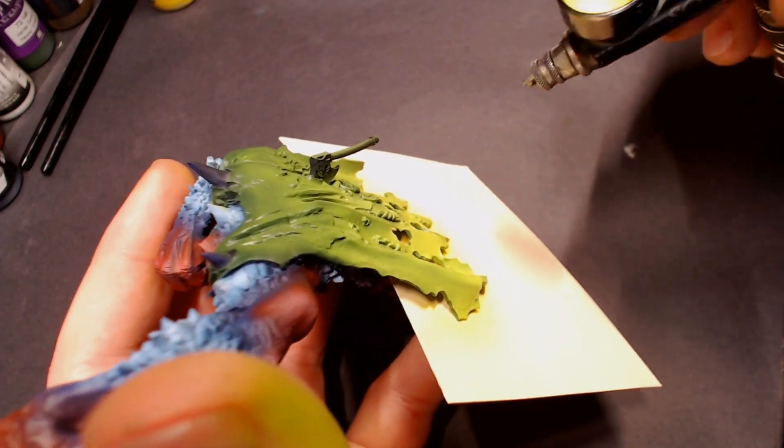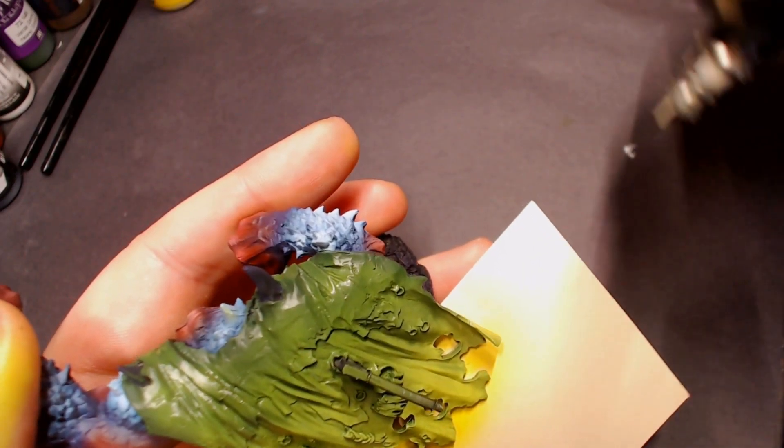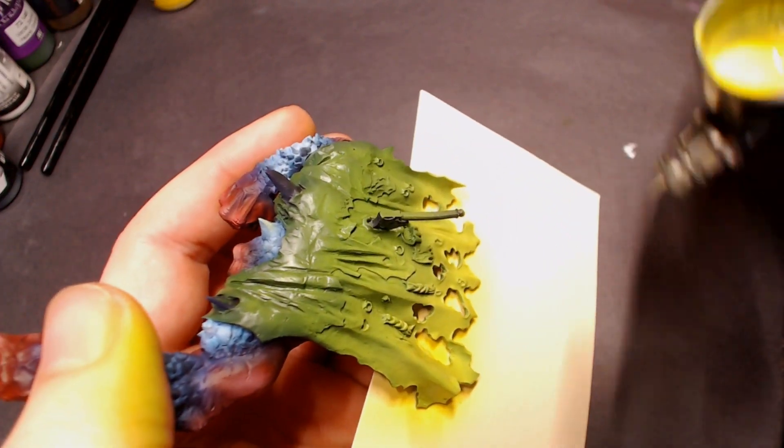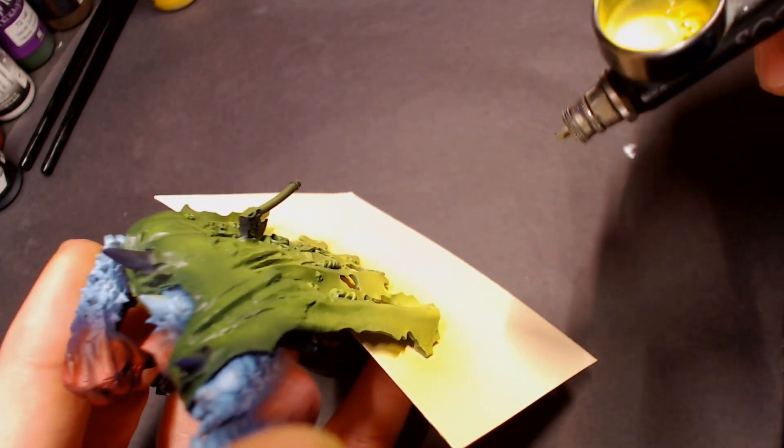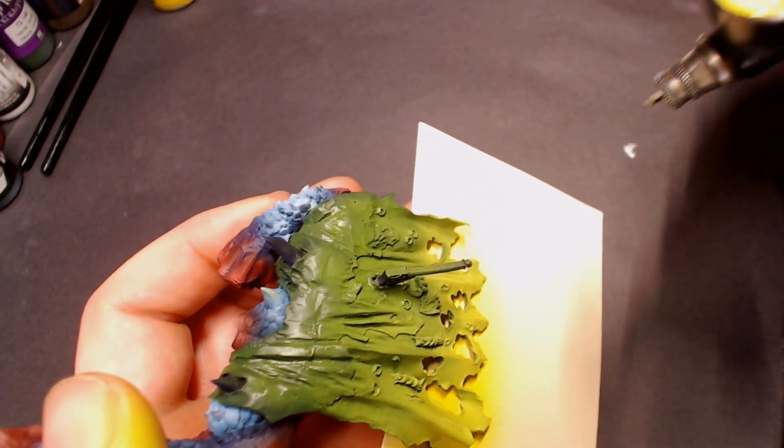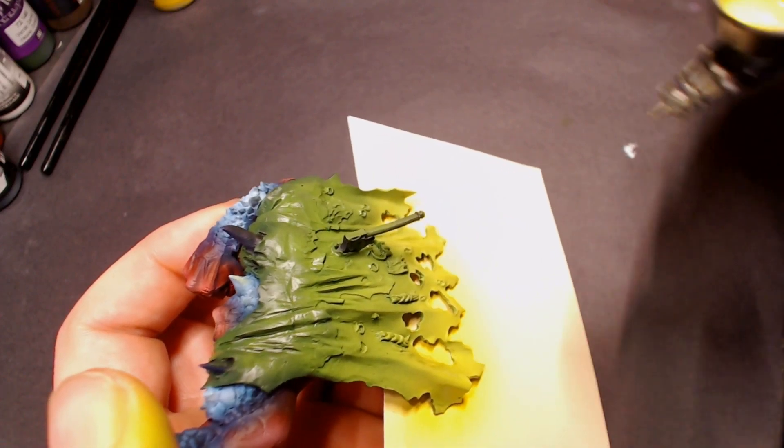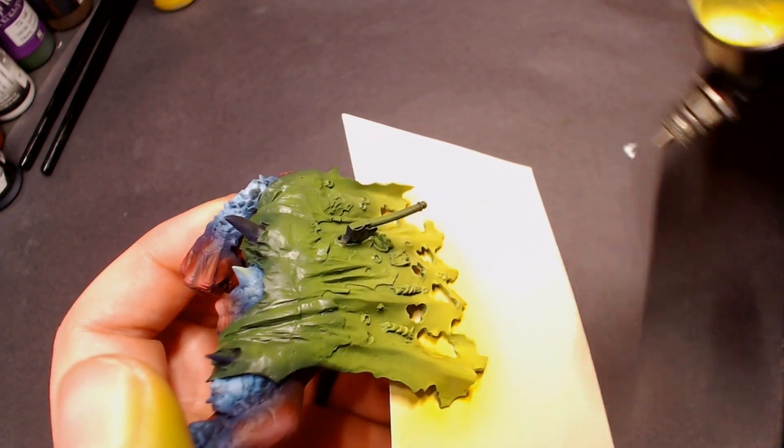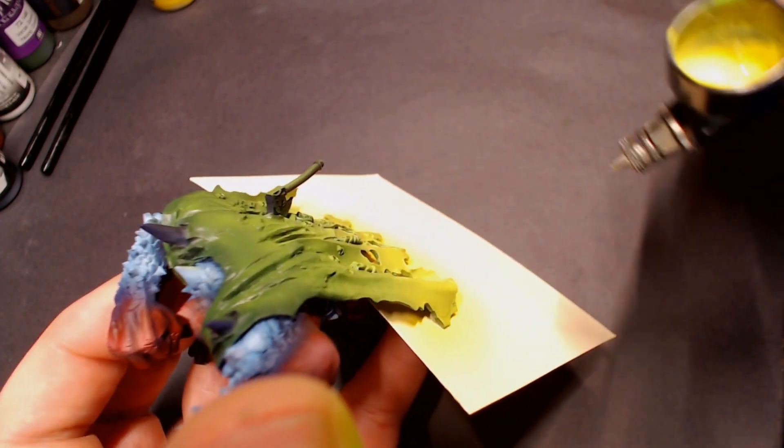You've got to remember when you're spraying yellow paint, yellow is typically pretty transparent by itself, transparent or translucent however you want to call it, but it's going to take a little bit to build up. So don't try to force that yellow paint. Build it up in thin coats, do a little bit of spraying, let it dry out, use the air from your airbrush to help it dry out, and then put on a little bit more.